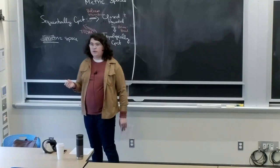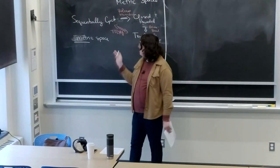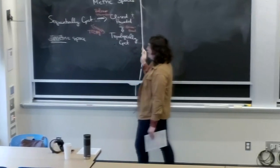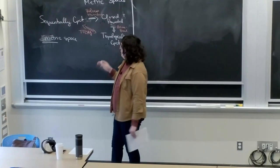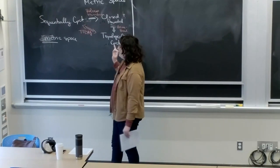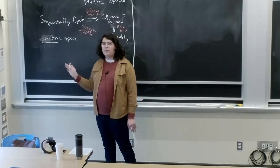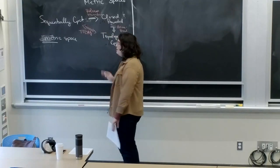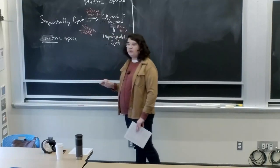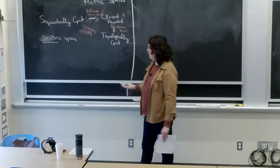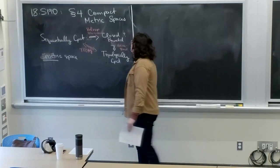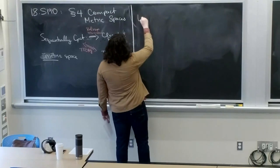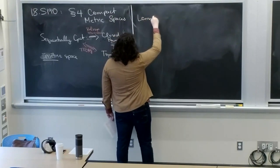It's going to be a very proof-intensive day. So our goal for today: before we show sequentially compact implies topologically compact and the opposite direction, we're first going to prove some lemmas about sequential compactness to make our job a little bit easier in the long term. These lemmas are going to be used throughout the rest of the class, so please pay attention. First, we have what is known as the Lebesgue number lemma.